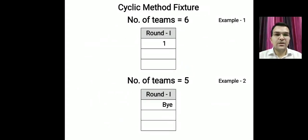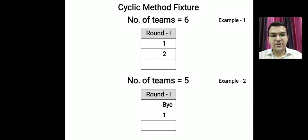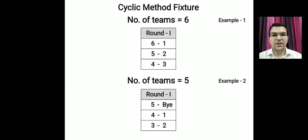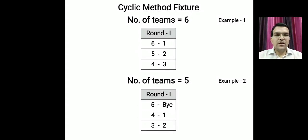Let us see how the first round is arranged. With six teams, we fix team number one on the top-right side; with five teams, we fix a bye on the top-right side. After doing this, we write the remaining teams in a clockwise pattern. In the even case with six teams, all teams play each other in the first round. With five teams (odd), one team receives a bye.